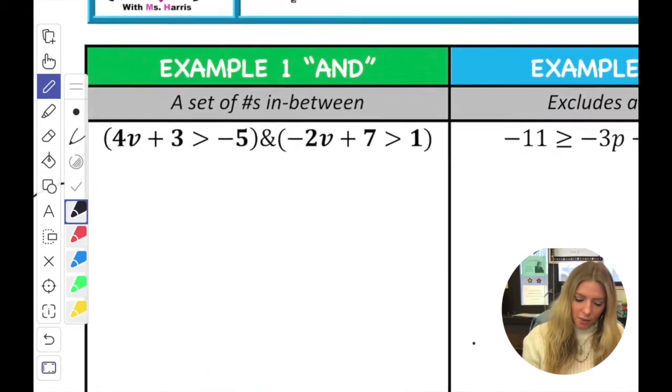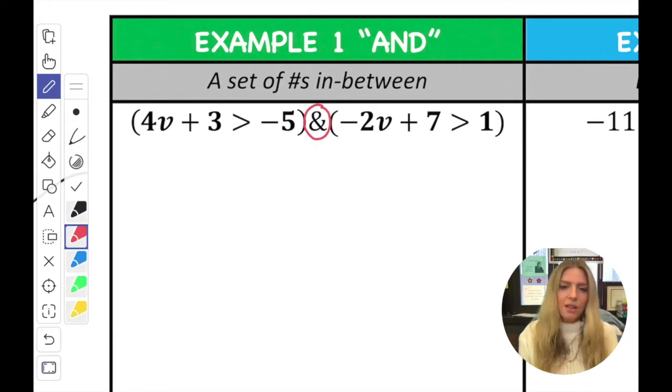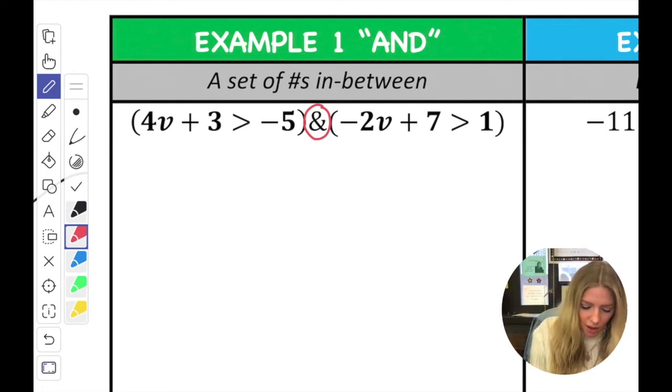We've gone over how to solve inequalities, how to graph compound inequalities. So now we're just going to put that all together today. So the first thing I'm going to do here, this is an and situation. I can tell that because there's an and symbol in between. I can also see that there's two separate inequalities. So it looks just like a two step equation that you're going to solve. So I'm going to go ahead. I like to split it at the sign.